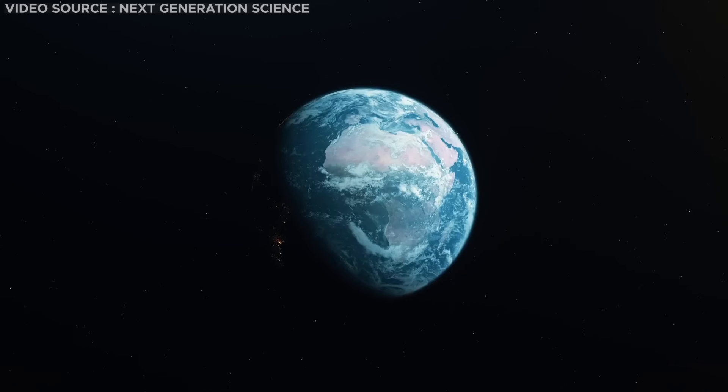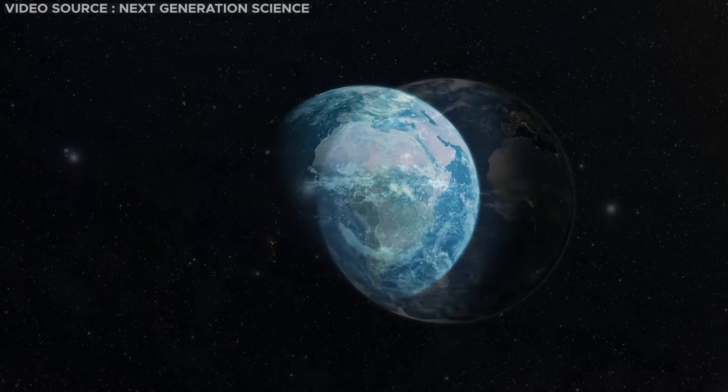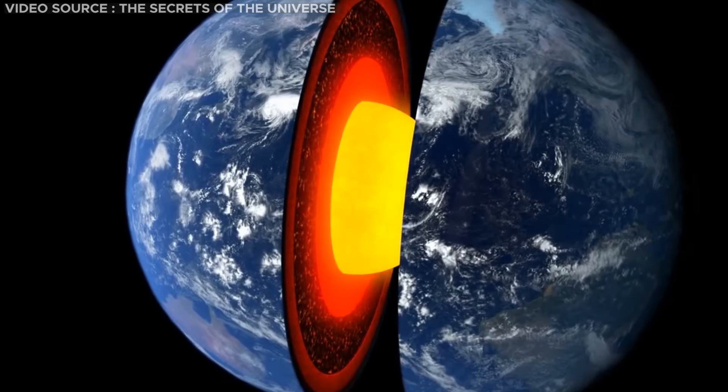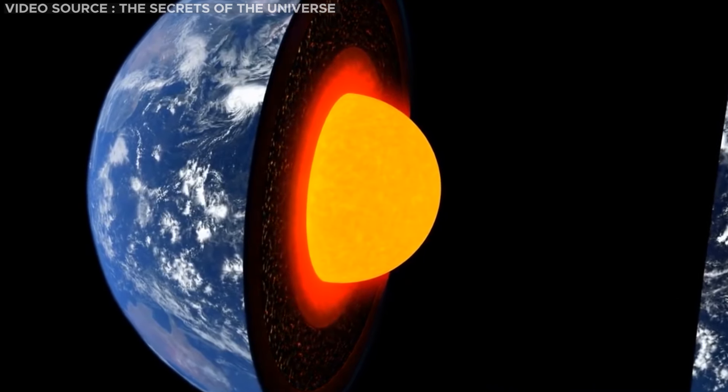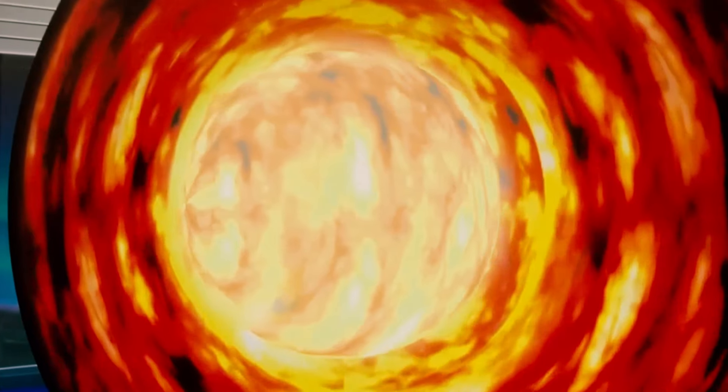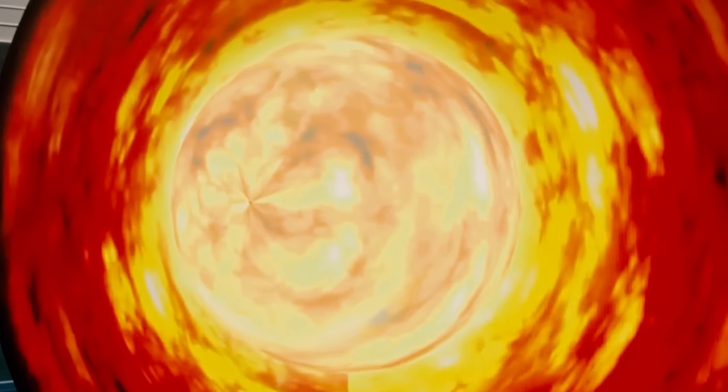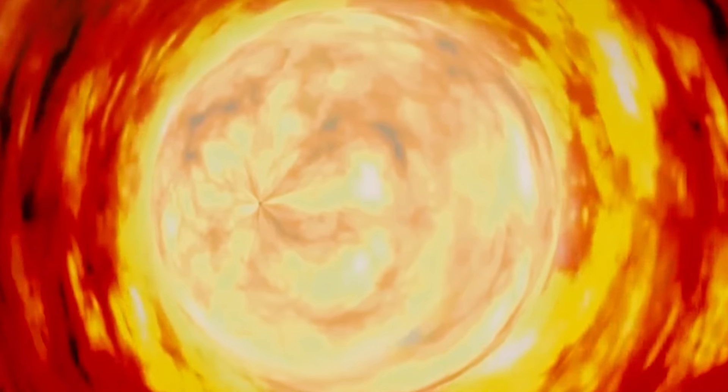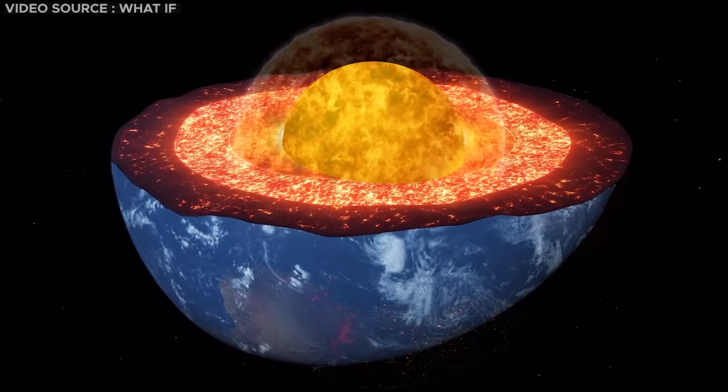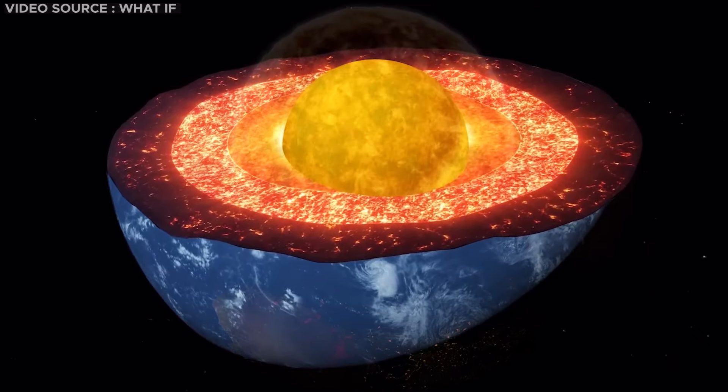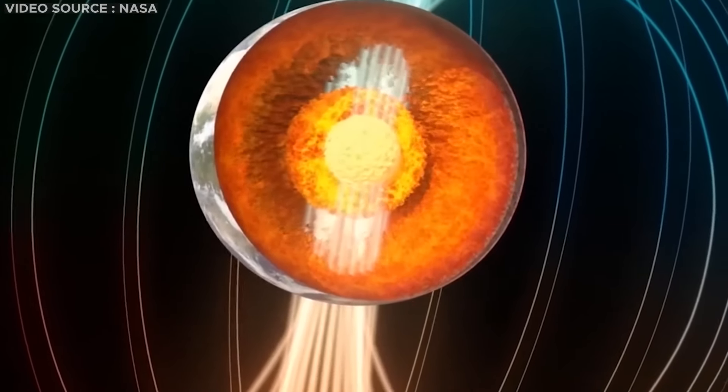On shorter time scales, numerous factors influence the speed of Earth's rotation, with the movement of the molten core being among the most crucial. The extent to which turbulence within the liquid interior affects the overall rotation remains uncertain. Observing the Earth's core is challenging, and researchers are still grappling with understanding its impact on the planet's orbit.